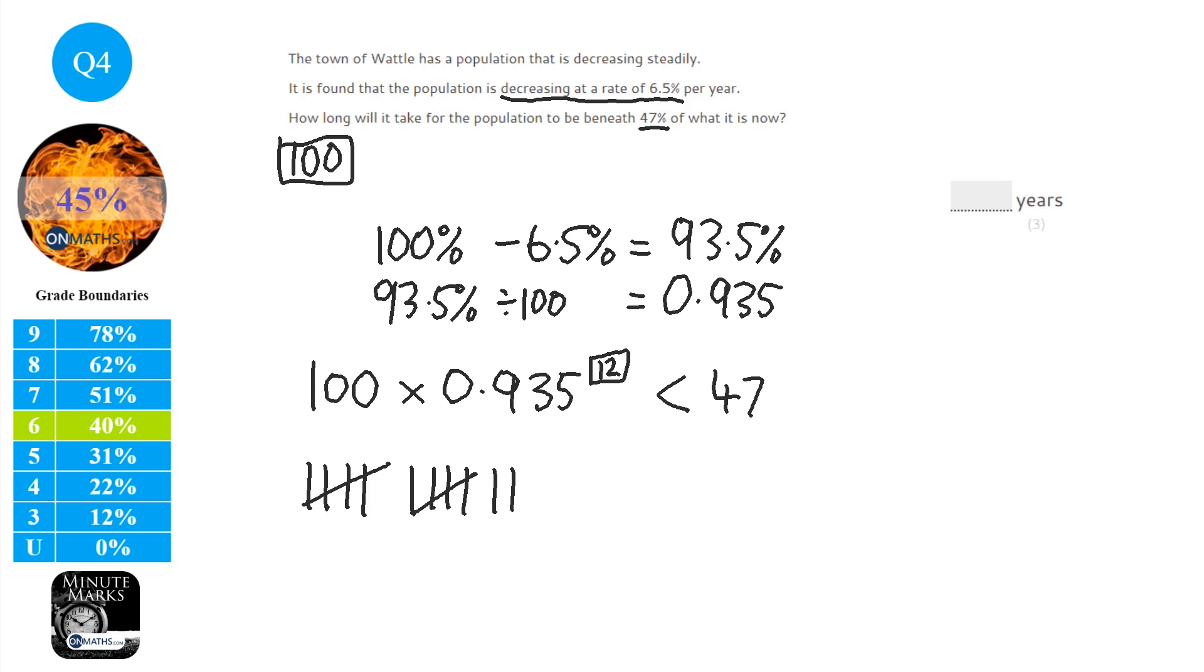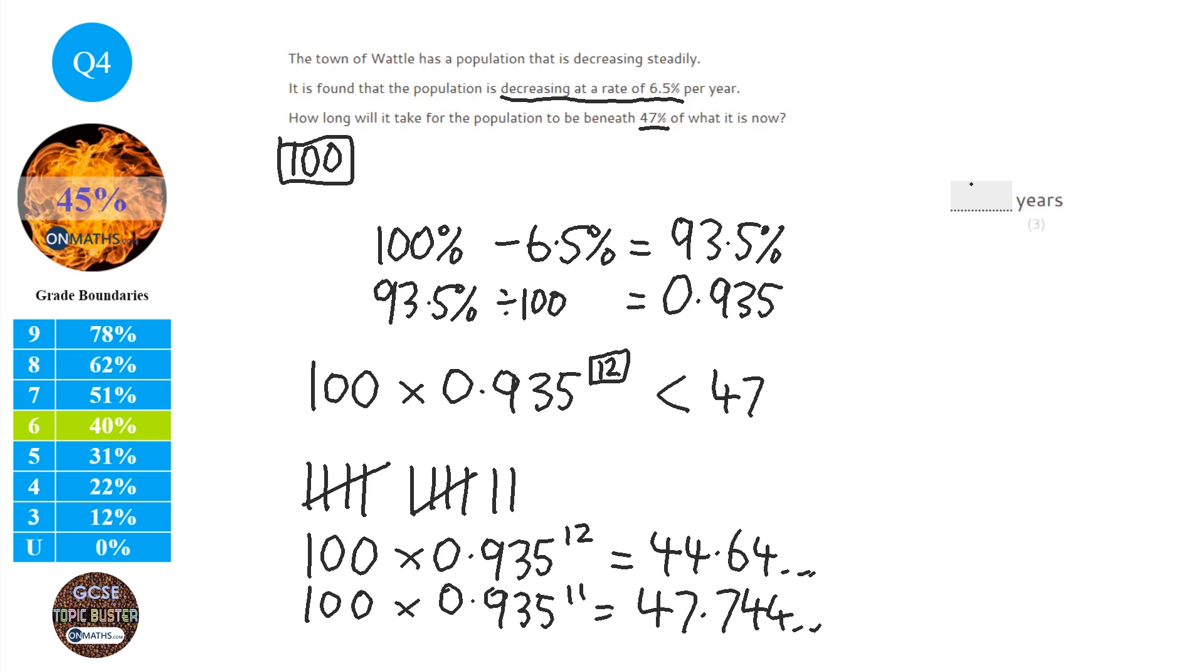Now I'll always want to check that because my counting is not necessarily the best when under pressure. So what I'm going to do is I'm just going to do 100 times 0.935 to the power of 12 to check that I've got this right. So 100 times 0.935 to the power of 12 and I get 44.64. And I'm just going to check that that was the first time it went under. So I'm going to do to the power of 11. And what I can do is just scroll through my working out in the calculator and change the 12 to 11. And press equal and that's 47.744 blah blah blah. So it's going to take 12 years because 11 years gets us close but not quite over the line. It's the 12th year that it dips below 47%.